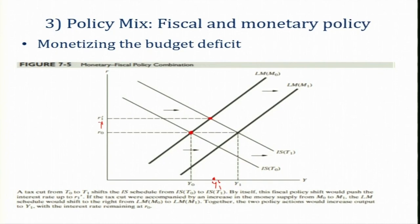In order to compensate for the crowding out effect, one option is a policy mix. When there is an increase in government expenditure there will obviously be a budget deficit. In order to monetize that — to raise finance for it — sometimes a policy mix happens: an equivalent amount of money supply is injected into the economy, that is, an increase in money supply to finance the budget deficit. As a result, the IS curve shifts from IS-T-naught to IS-T-1.